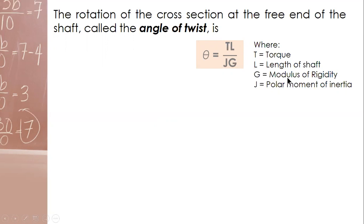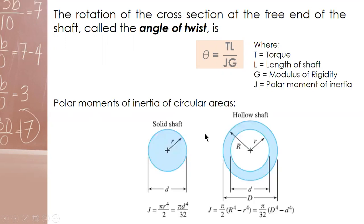So this is the element for angle of twist. Property of the material is given by polar moment of inertia J via formulas. The polar moment of inertia for circular areas: for a solid shaft and for a hollow shaft, these are the formulas for moment of inertia, the polar moment of inertia.